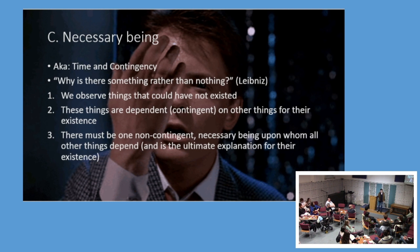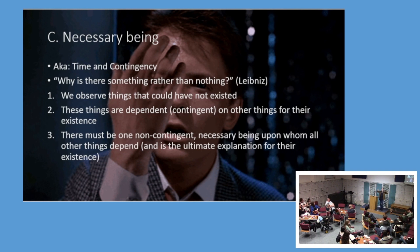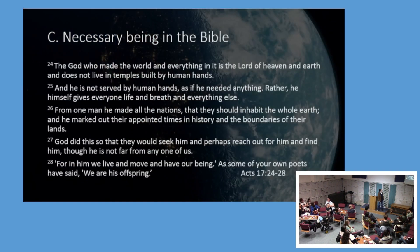Aquinas observed that things could not have existed — Marty McFly may not have existed if his parents hadn't got together, and you wouldn't have existed if your parents hadn't. You and I are contingent beings; we don't have the necessity of being within ourselves. So Aquinas says there must be one being who is not contingent, not dependent on other beings — a necessary being who has to exist, who has the property of existence within himself, upon whom all other things depend.